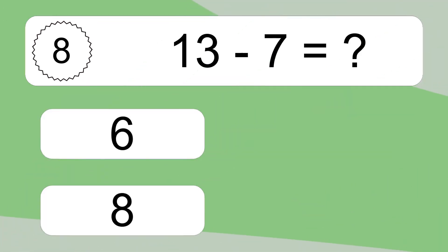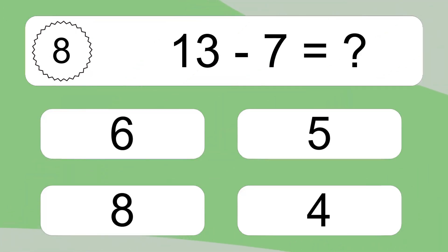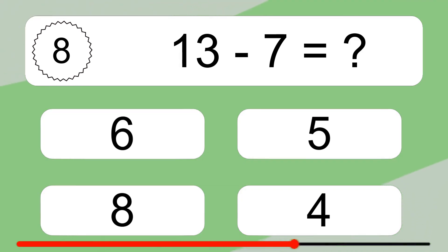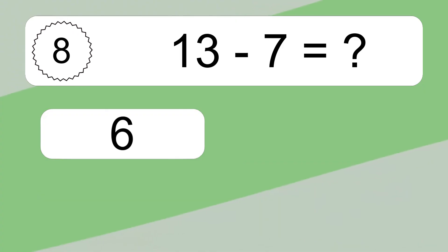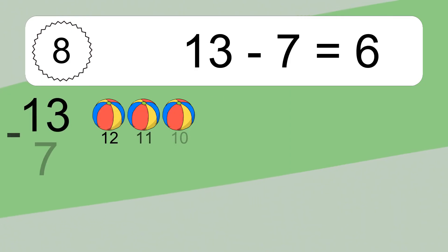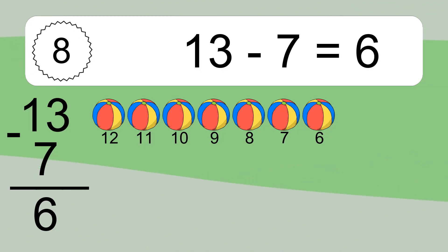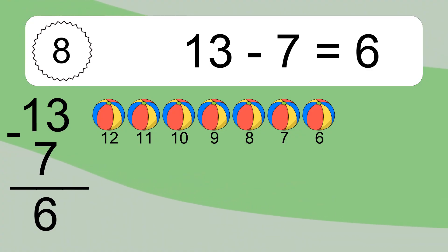13 minus 7 equals what? 13 minus 7 equals 6. Let's count it. 12, 11, 10, 9, 8, 7, 6.